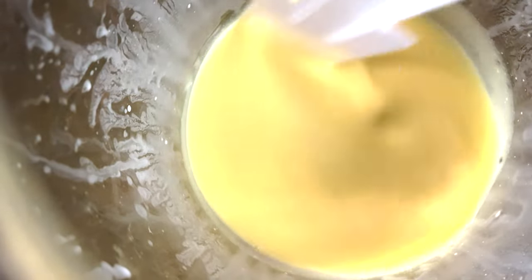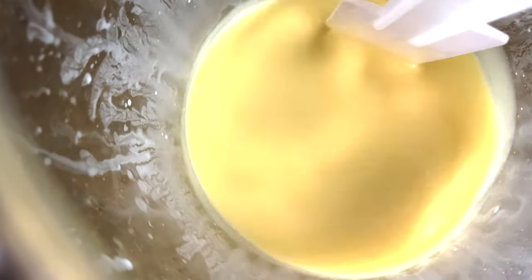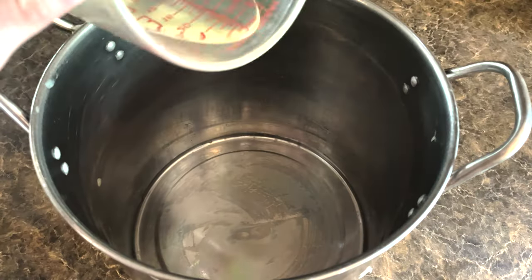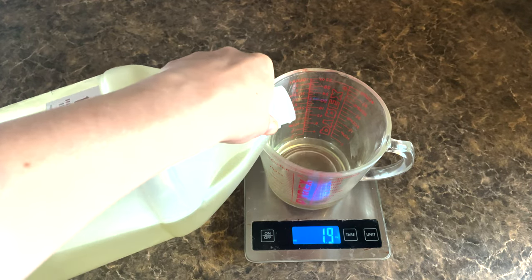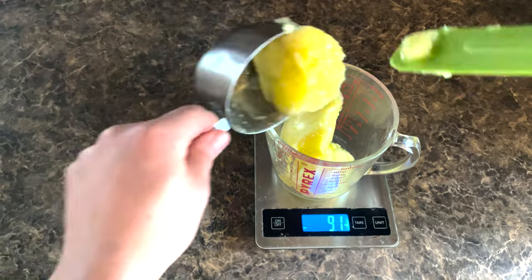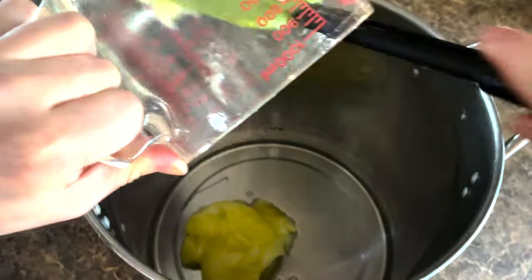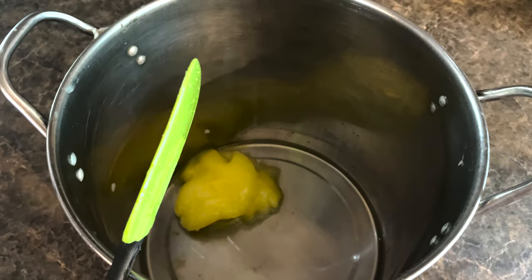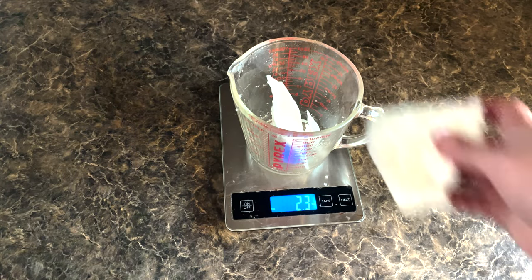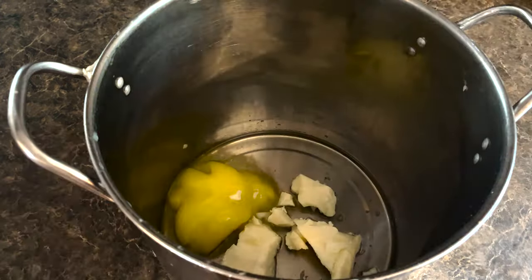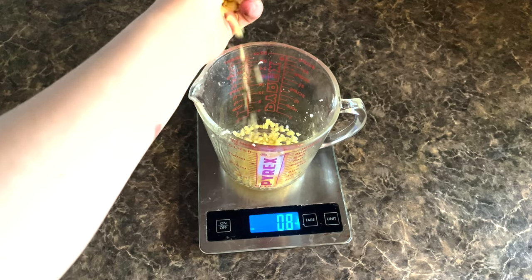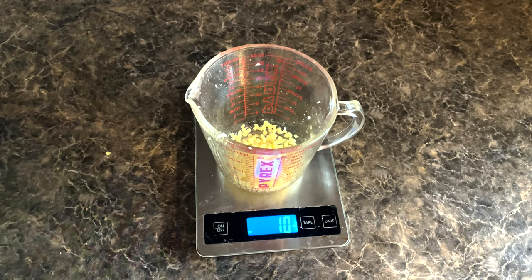Once we are done with mixing those together, we can move on to the next step which is measuring out our oils. We will start out by measuring three ounces of almond oil, then two ounces of castor oil, ten ounces of olive oil, six ounces of palm oil, coconut oil, three ounces of shea butter, and lastly one ounce of beeswax.